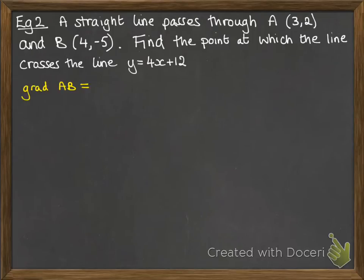First of all, we need the gradient of the line AB and we can work out the equation of it. That one you've done previously, the change in y over the change in x. This would be minus 7.